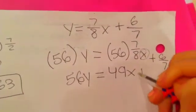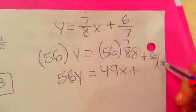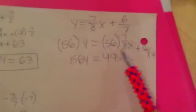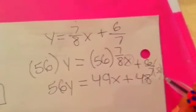Then you add the plus sign. And you're supposed to add 56 here too. So 56 times 6 is 336. But we need to divide 336 by 7, because that's the denominator. So 336 divided by 7 is 48. So it's plus 48. And there's no variable at the end, so it's just 48.